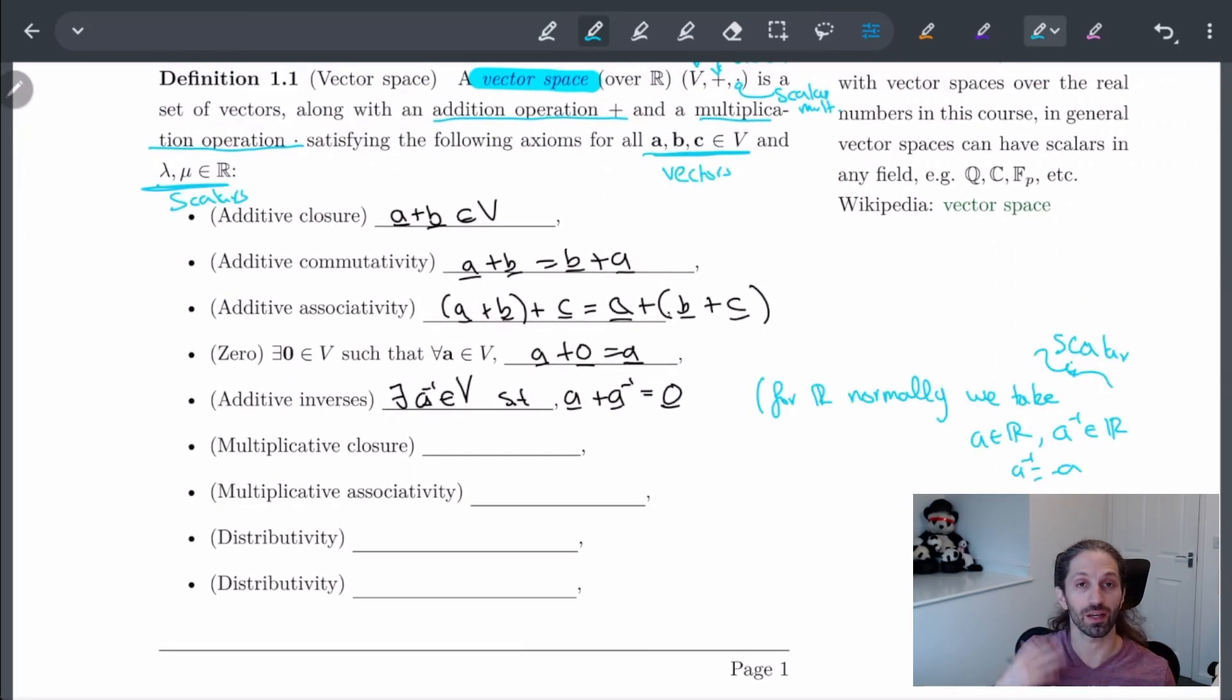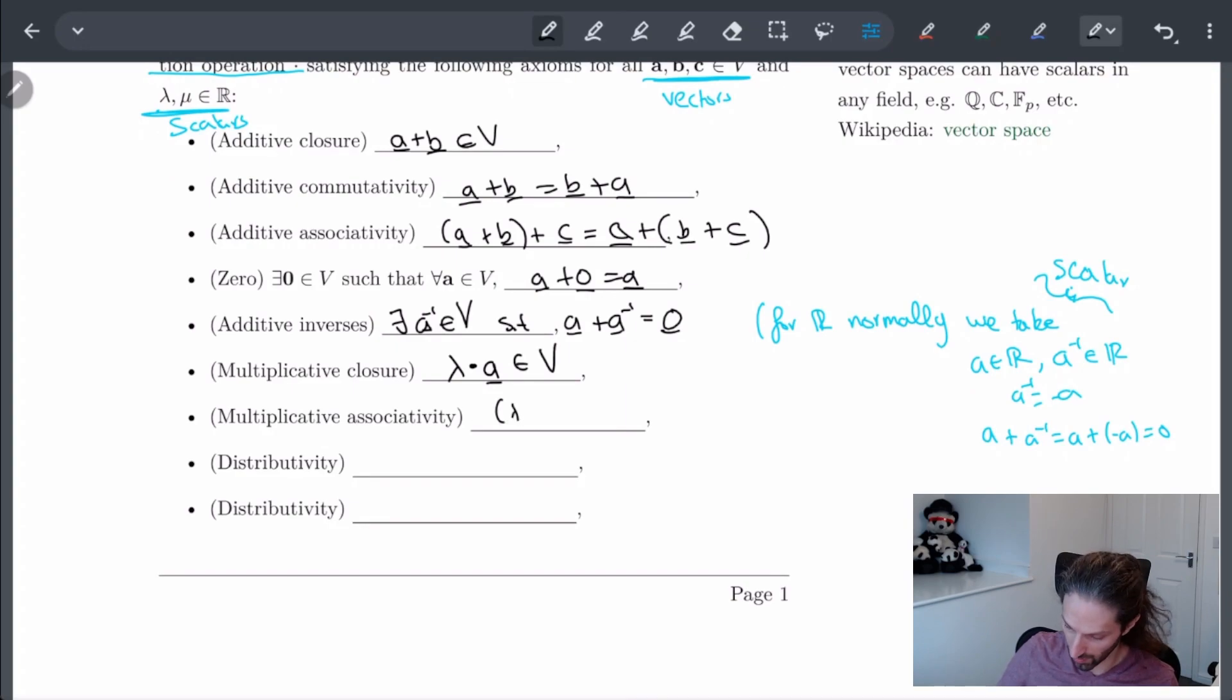Okay, so let's keep going and finishing up our definition of our vector space. This, again, should be things you already know. I should be able to multiply by a scalar and still live inside my vector space. Multiplicatively, this should be associative as well. So I should be able to first multiply the scalars and then multiply the vector, or I might be able to do one scalar and then another scalar.